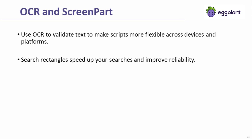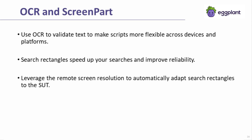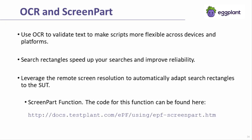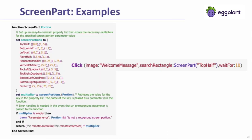Instead of setting search rectangles based on elements unique to the UI of a particular device or platform, you can set them up based on the actual remote screen resolution of the SUT, which means they adjust automatically to the current SUT. The screen part function, available in our online documentation, provides an example of how to set up adaptive search rectangles based on the proportions of the overall screen size. Add the screen part function to your core capability suite so you can leverage it from all of your application-specific suites.